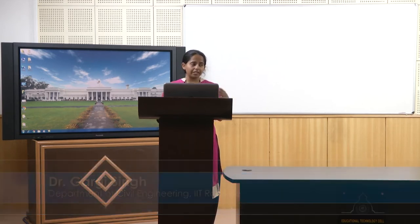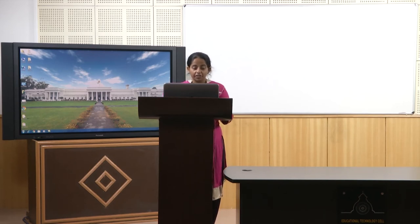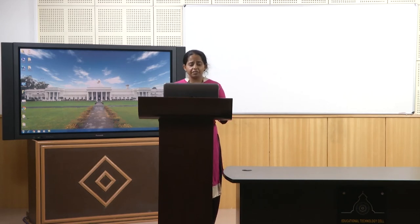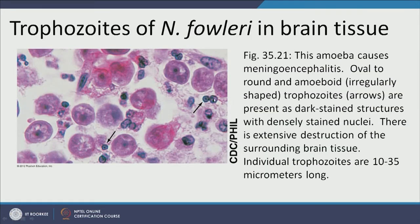People usually become symptomatic only after the damage is too extensive. In 1977, 46% of sampled lakes tested positive — a very high number, so avoid swimming in lakes. This image shows Naegleria fowleri growing inside brain tissue and consuming it, causing extensive destruction of brain cells.